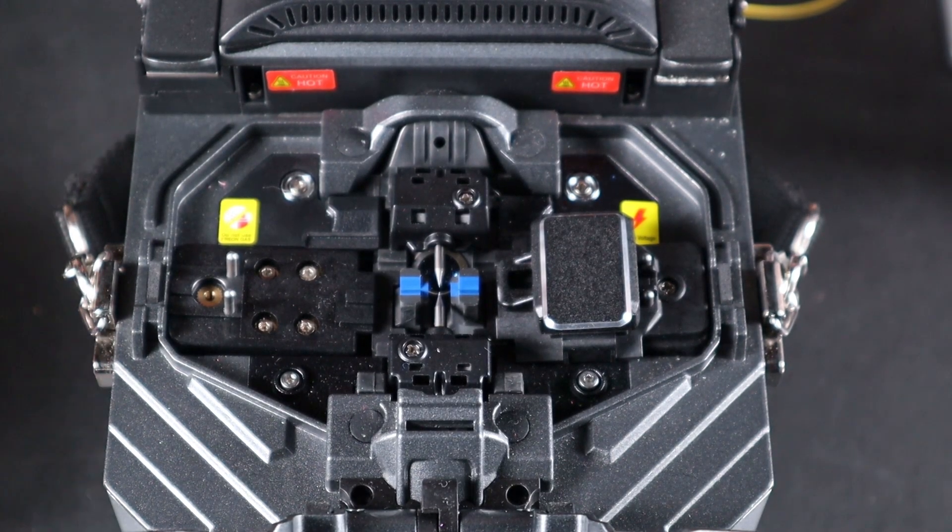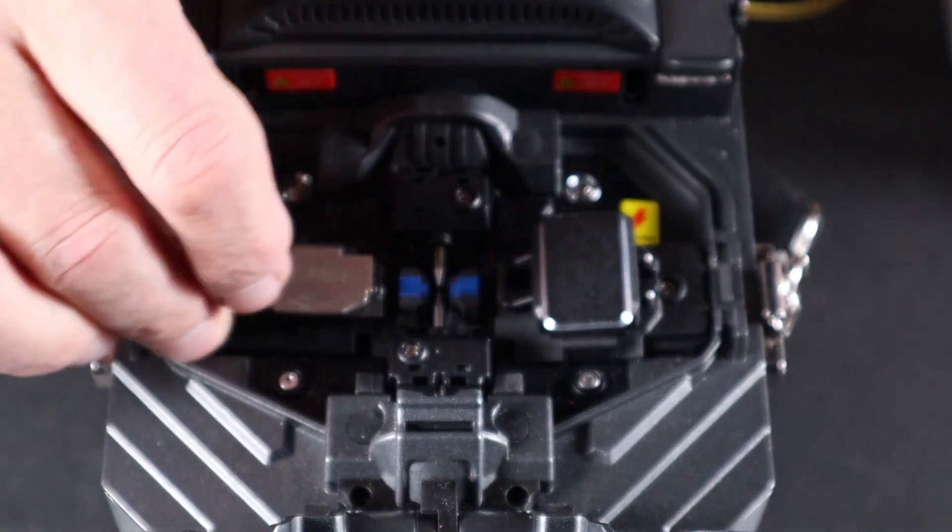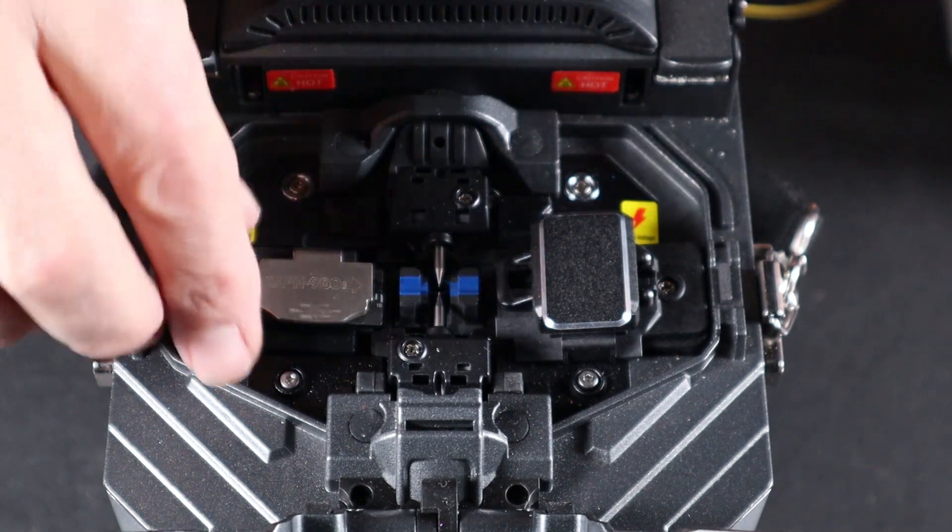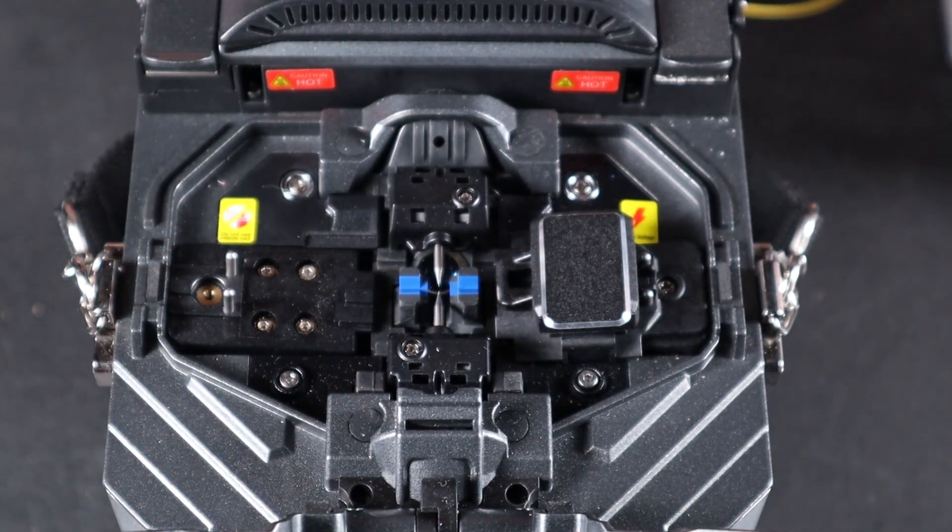At this point now, you're able to use the movable holder throughout your stations. You can use it on your stripper and then on your cleaver as well.